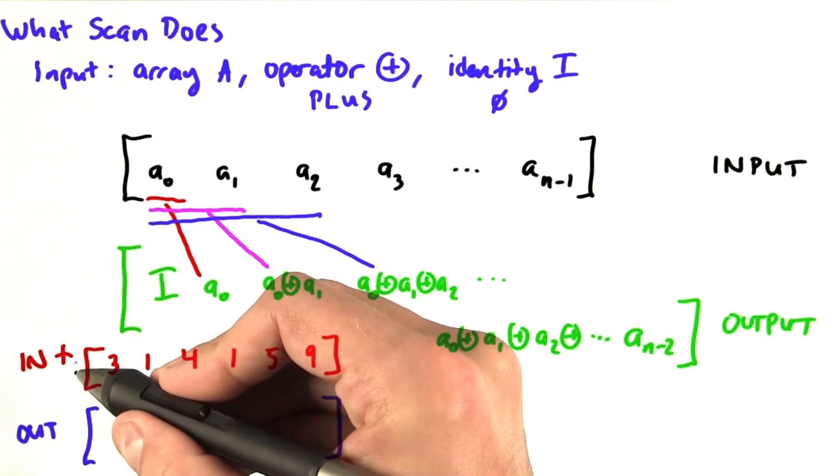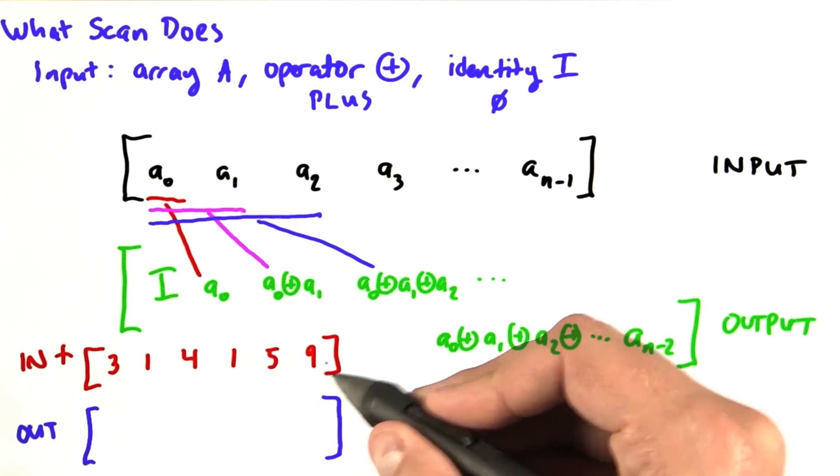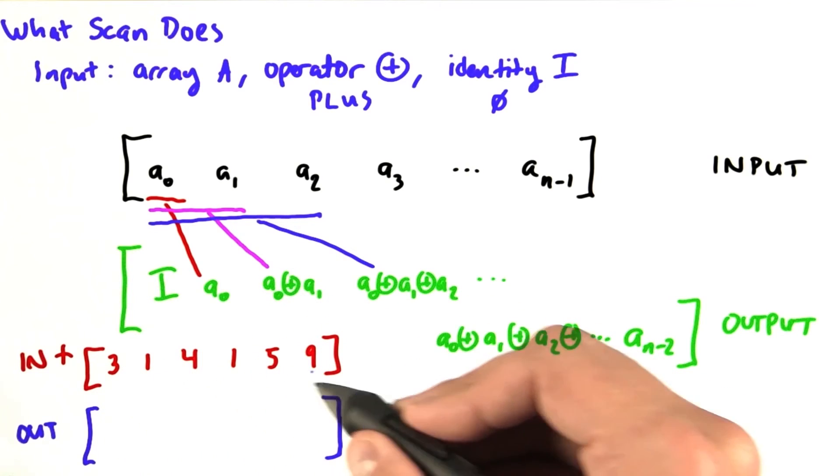Let's do a simple example. Let's take the sum scan of this input array, 3, 1, 4, 1, 5, 9.